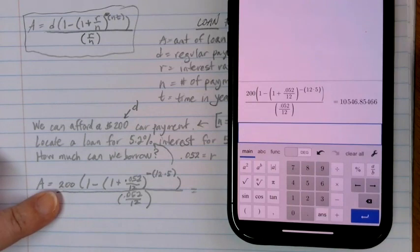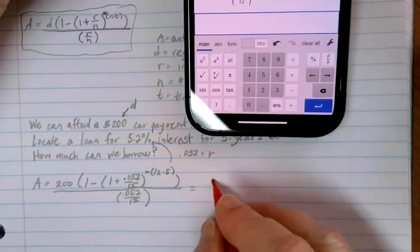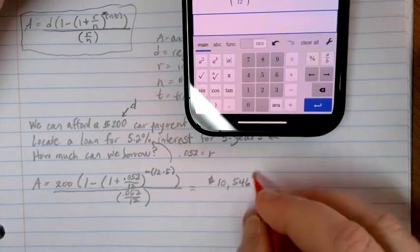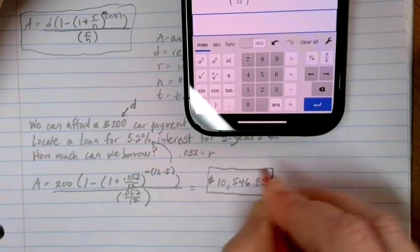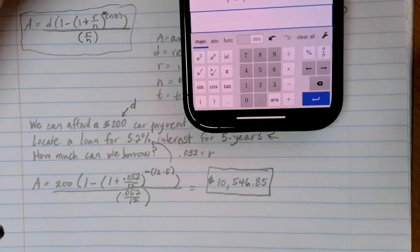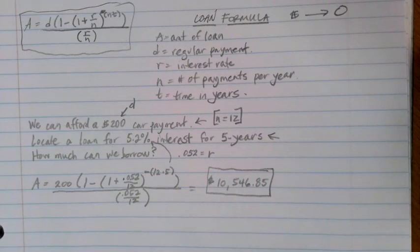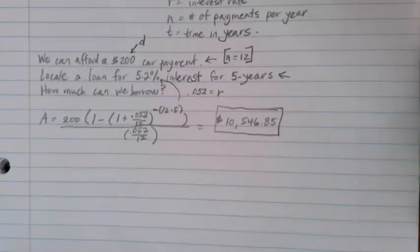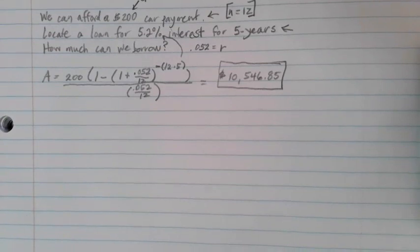If we can pay $200 a month and this is the loan that we qualify for, this is how much we'd be able to borrow. That will be how much we can afford with this monthly payment. If we want a more expensive car than this, we'd have to make a down payment up front of some sort to bring the value down so that this is all that we have to borrow.